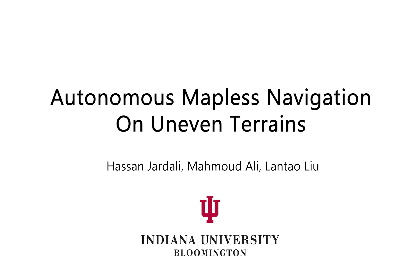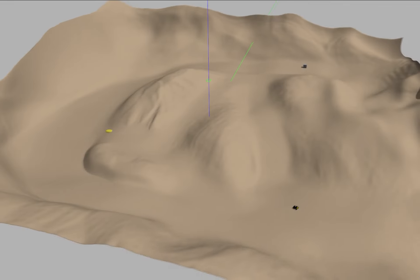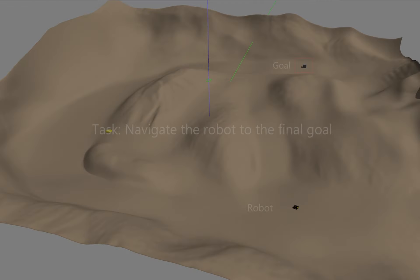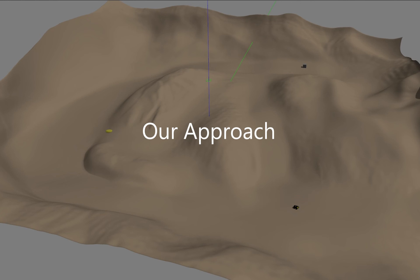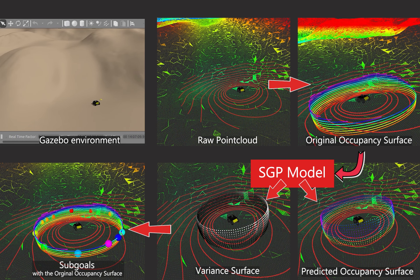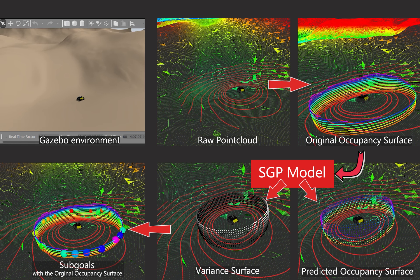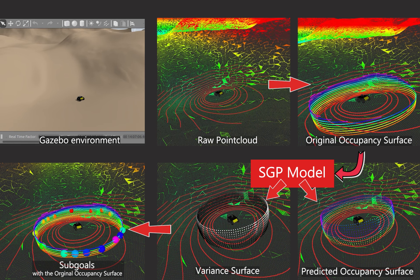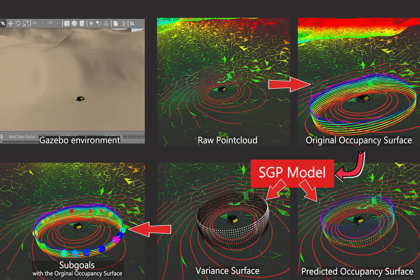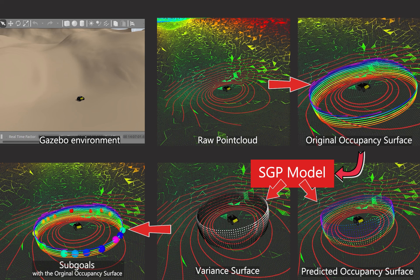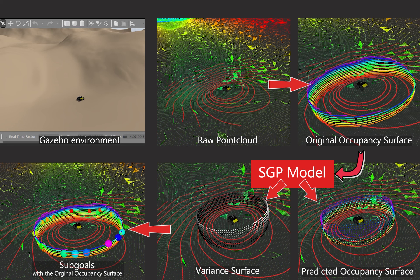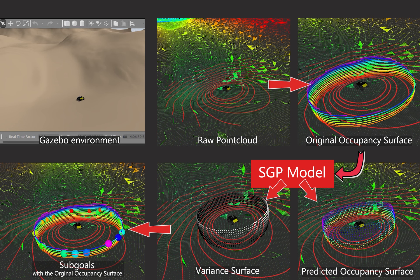The goal of the navigation task is to autonomously drive the robot from a starting position to a designated final goal, ensuring safe and efficient traversal. The algorithm is fed point clouds along with odometry data. These point clouds are then transferred to the original occupancy surface, which serves as the input for a sparse Gaussian process, SGP.